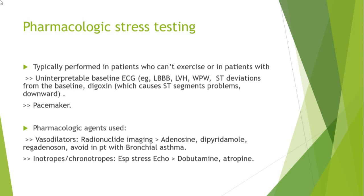Pharmacologic stress testing is preferred in patients who cannot exercise or in patients with an uninterpretable baseline ECG or a pacemaker. Those patients should not have a stress ECG; instead, they will undergo pharmacologic stress echo — for example, giving dobutamine and performing an echocardiogram. The pharmacologic agents typically used are vasodilators, which are more often used with radionuclide imaging. Common vasodilators include adenosine, dipyridamole, and regadenoson. We must avoid these vasodilator drugs in patients with bronchial asthma, as they can trigger an acute asthma attack.